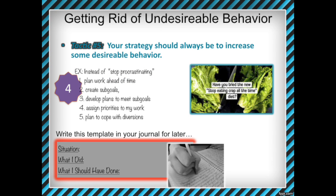Our strategy should always be to increase some desirable behavior. There will always be another bad behavior that will rush in to replace the bad behavior you stop doing. So instead of leaving space for one bad behavior to replace another — for example, some people stop smoking but then start overeating — replace your bad behavior with a positive behavior. As you increase desired behaviors, you'll also decrease negative behaviors.